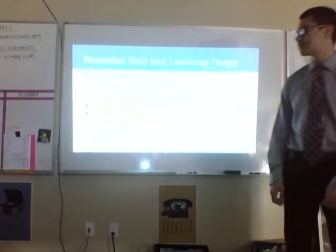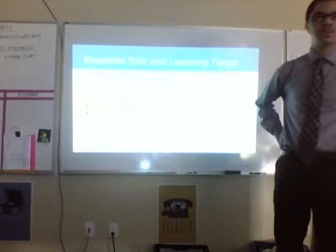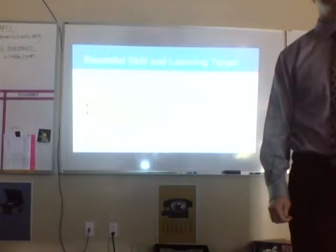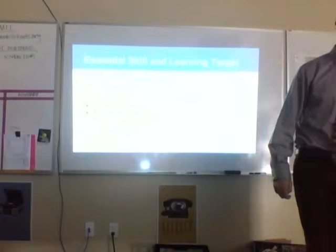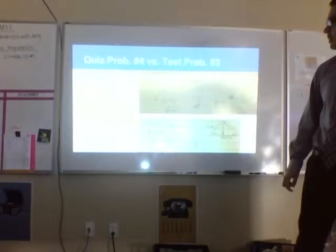I received my notice grades on essential skill 2, targets 2.3 and 2.4, which is properties of 45-45-90 and 30-60-90 triangles. The misunderstanding was how to use the equation and how to solve it. I was very confused on how to solve it.